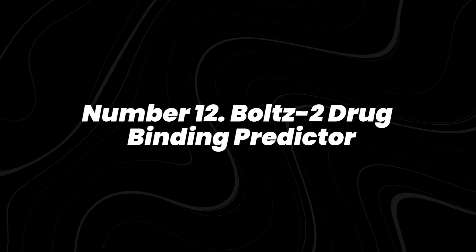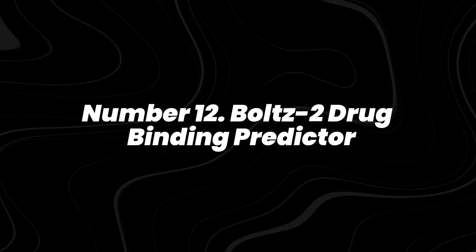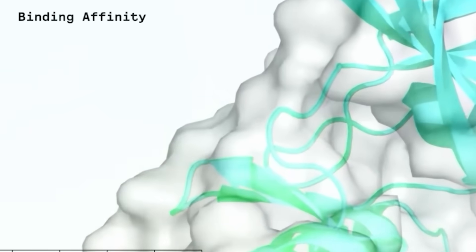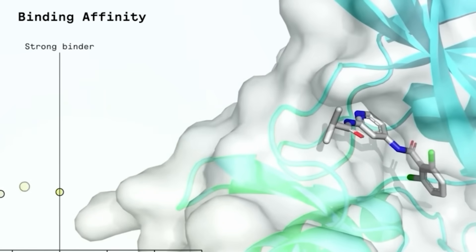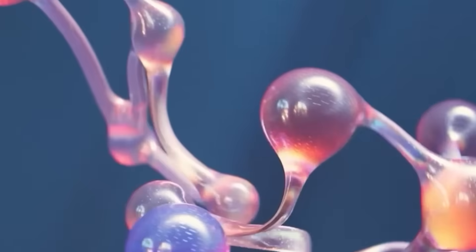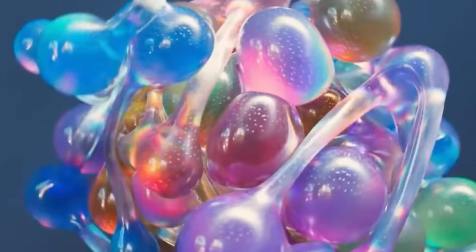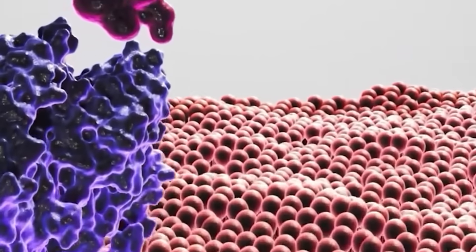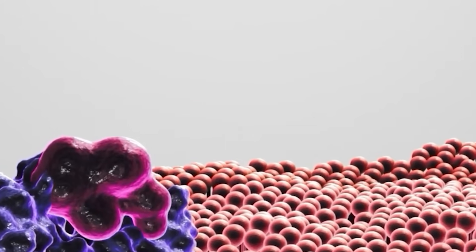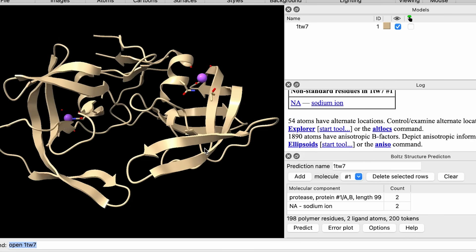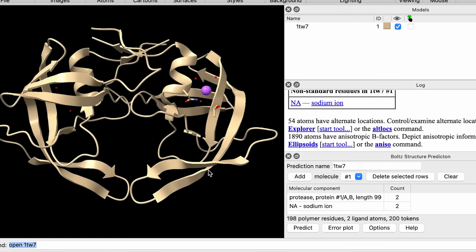Number 12, BOLTS2 Drug Binding Predictor. MIT's Computer Science and Artificial Intelligence Laboratory unveiled BOLTS2, an AI model that predicts how tightly a drug molecule binds to its protein target. It runs nearly a thousand times faster than physics-based simulations like molecular docking. That kind of speed could reshape drug discovery, allowing researchers to screen billions of compounds in days instead of years.